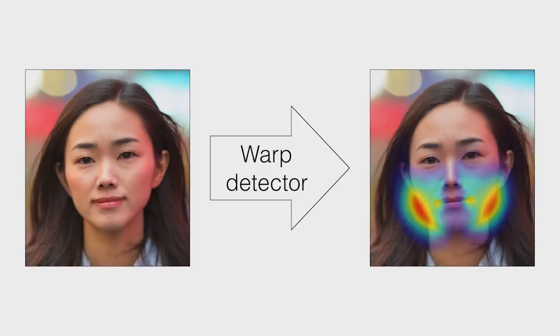In this work, we present a method for detecting one popular type of manipulation: image warping applied to human faces. For this, we use a model that's trained entirely using fake images, automatically generated by scripting Photoshop.